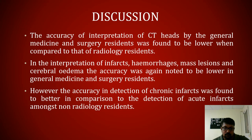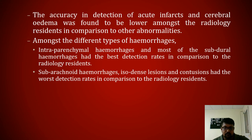Coming to the discussion: the accuracy of interpretation of CT brain scans by general medicine and surgery residents was found to be lower compared to that of radiology residents. In the interpretation of infarcts, hemorrhages, mass lesions, and cerebral edema, accuracy was again noted to be lower in general medicine and surgical residents. However, the accuracy in detection of chronic infarcts was found to be better in comparison to detection of acute infarcts among non-radiology residents. The accuracy in detection of acute infarcts and cerebral edema was lower amongst radiology residents compared to the other abnormalities. Amongst the different types of hemorrhages, intraparenchymal hemorrhage and most subdural hemorrhages had the best detection rates, while subarachnoid hemorrhages, isodense lesions, and contusions had the worst detection rates in comparison to radiology residents.